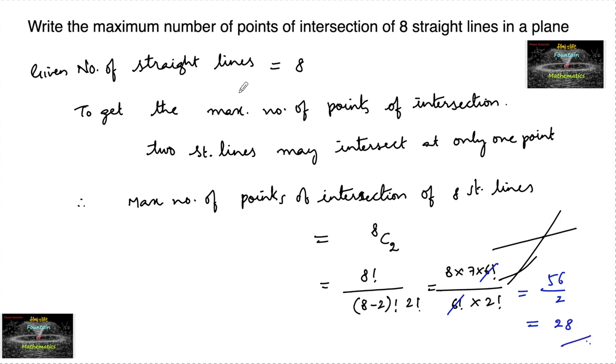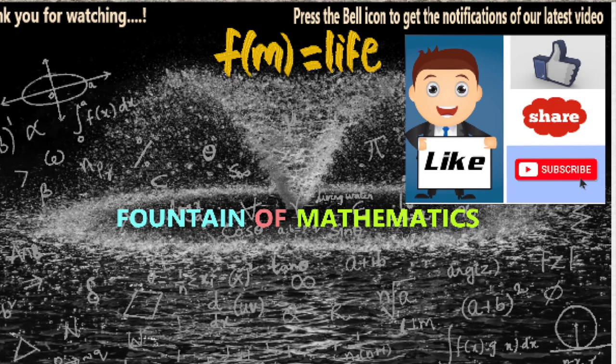So therefore, we can say maximum number of points of intersection of 8 straight lines in a plane is 28.